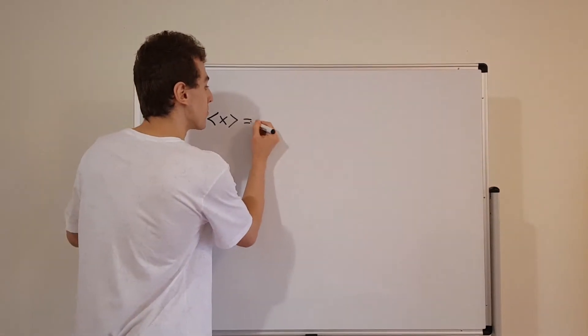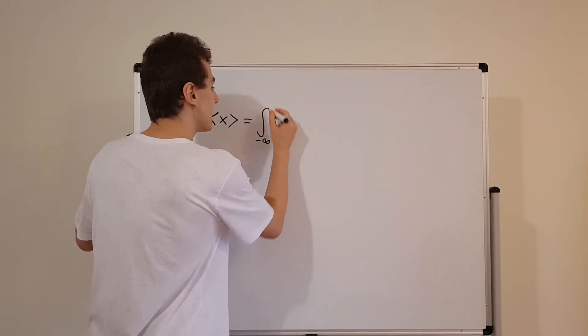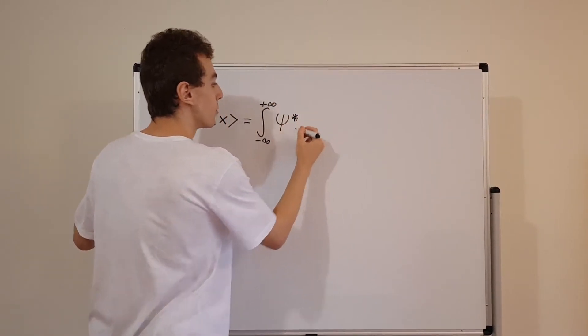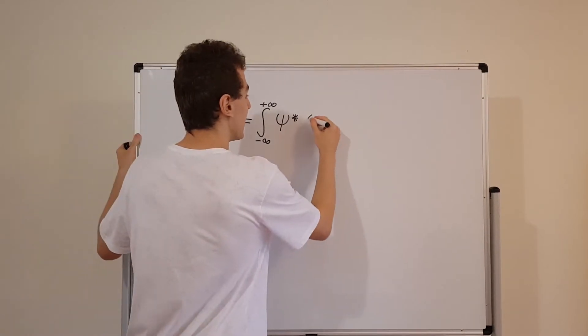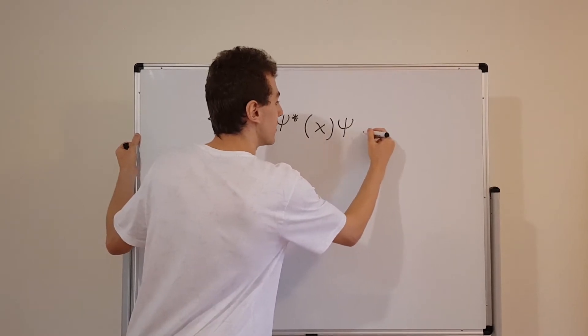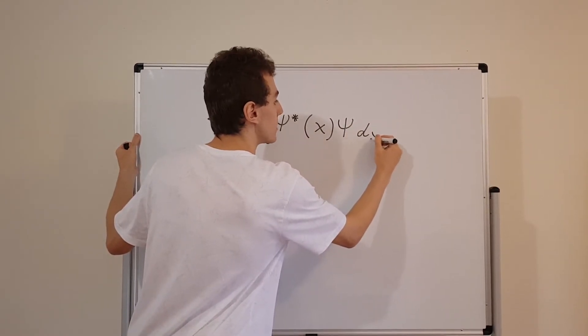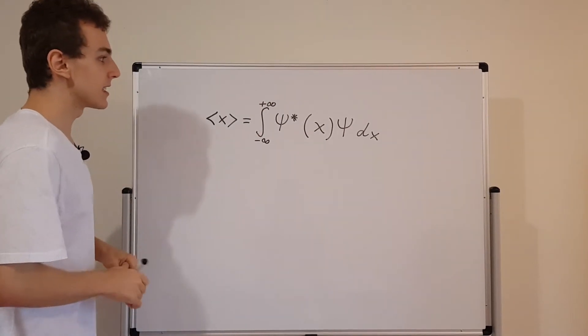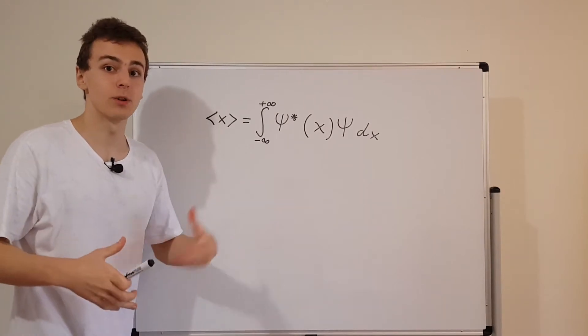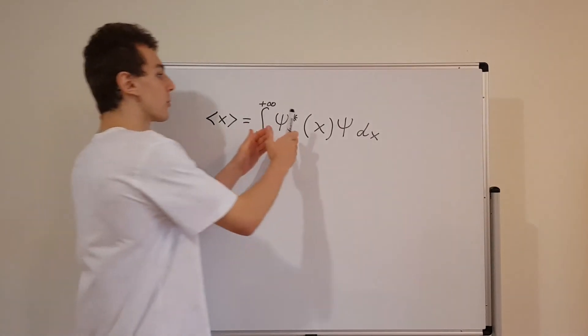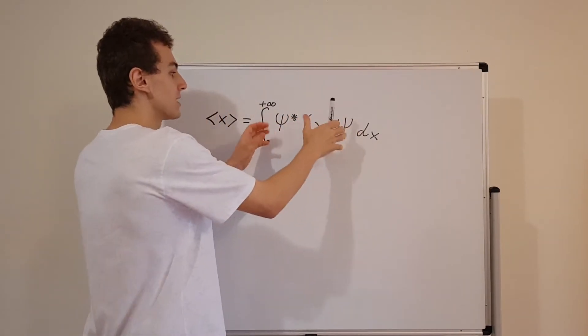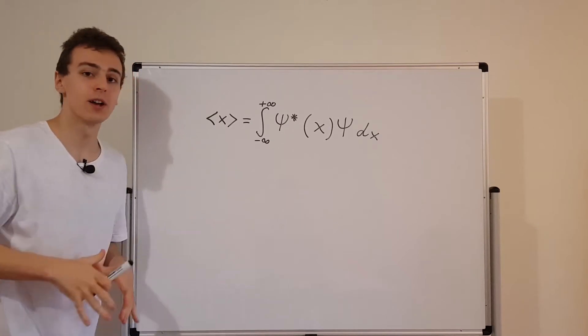That is equal to the integral from minus infinity to plus infinity of psi star, which is the complex conjugate of the wave function. And in the middle, I'm going to put this in brackets. I'm going to put x over here, and I'll put psi over here. And we're going to integrate with respect to x. This is a slightly different form to how we originally defined it in the previous videos. I've just rearranged this. I've reordered all the terms inside the integrand.